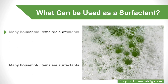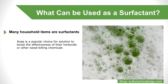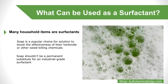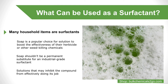Soap is a popular choice for people looking for a quick solution to boost the effectiveness of their herbicide or other weed killing chemicals. With foaming and degreasing abilities, it exhibits all the great qualities of a surfactant. However, it's important to note that soap and other everyday items shouldn't be permanent substitutes for industrial grade surfactants. They aren't proper surfactants, meaning other chemicals within these solutions may inhibit the compound from effectively doing its job when mixed with other chemicals such as herbicides. When possible, opt for an industrial grade surfactant to get the job done.